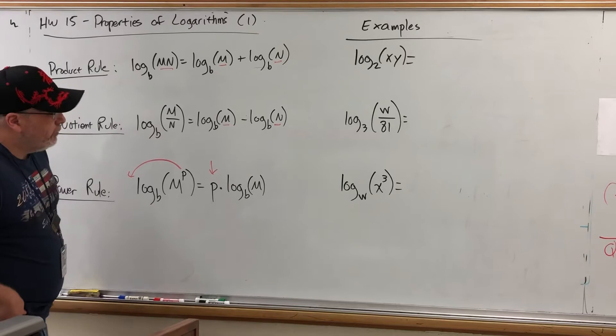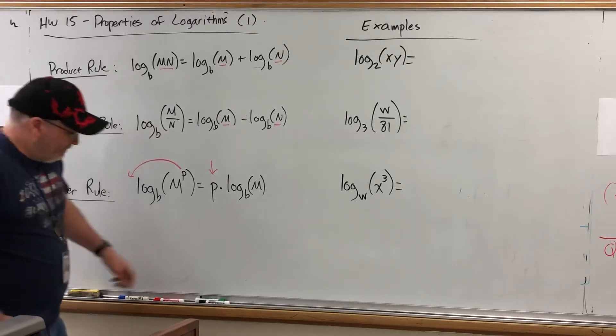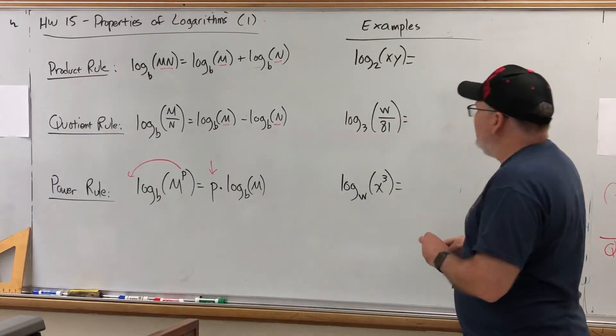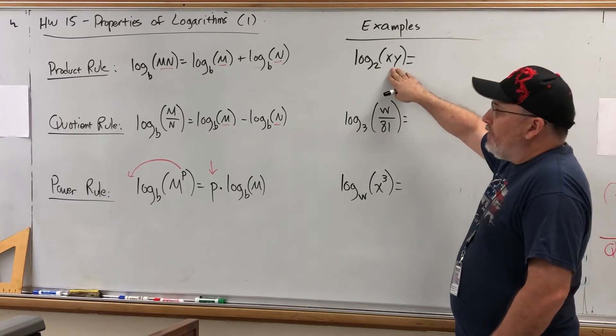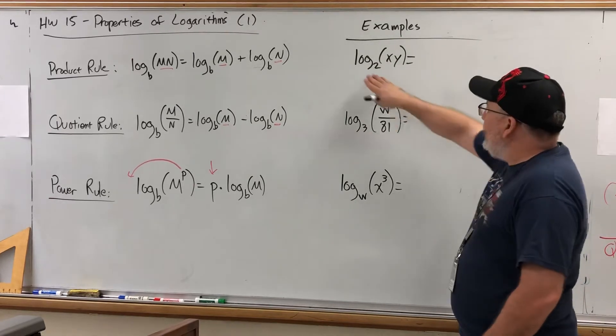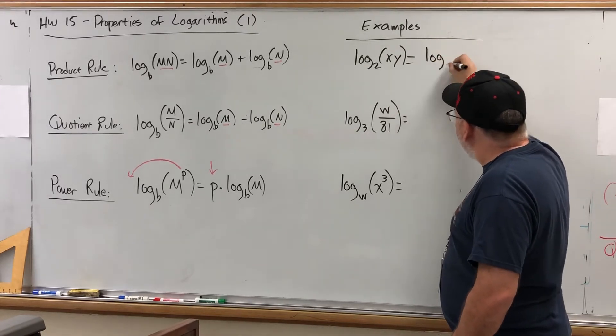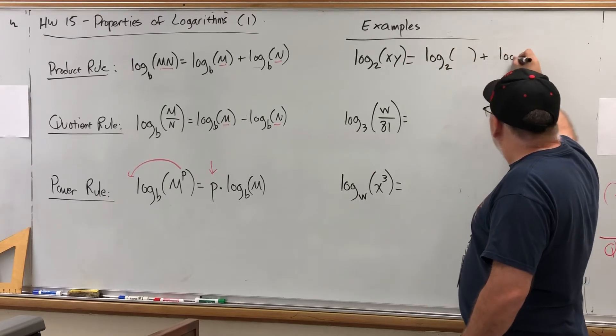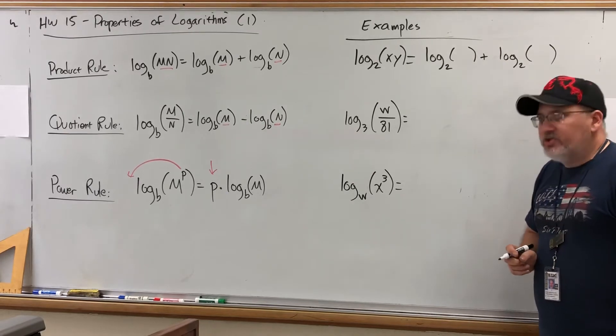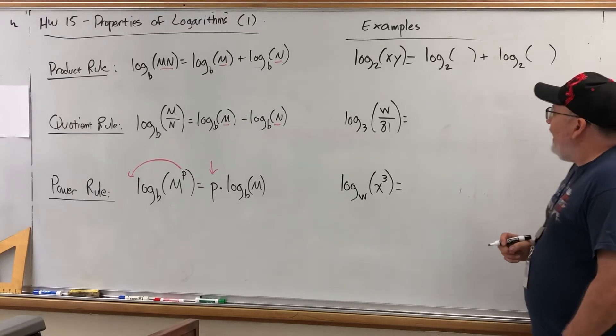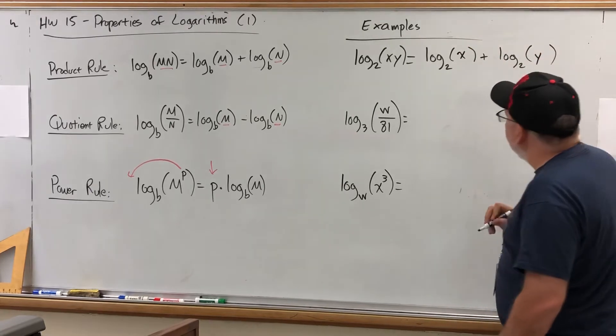Well, let's take a look at some real short examples, and then in the next few videos we'll look at some more in-depth examples. For example, let's say we have log base 2 of x times y. This is the log of a product. All the product rule says is if you have a log of a product, you can split it into two logs, each with the same base, or rather I should say the sum of two logs, each with the same base, and give each half of the multiplication problem its own logarithm. That's all.